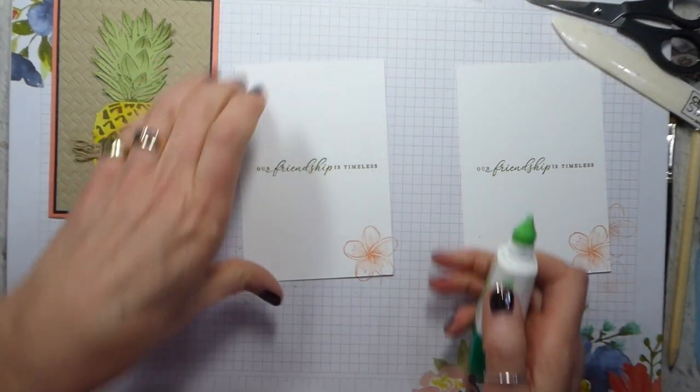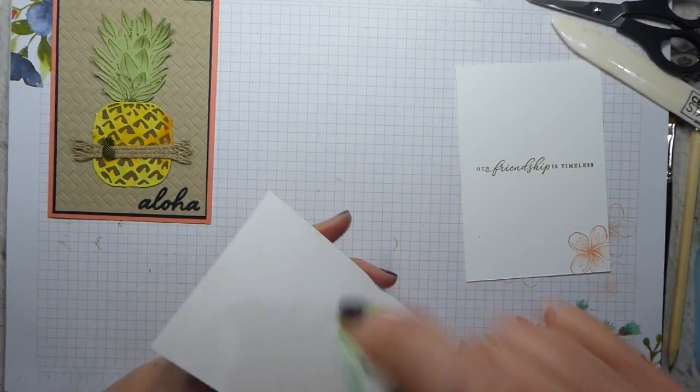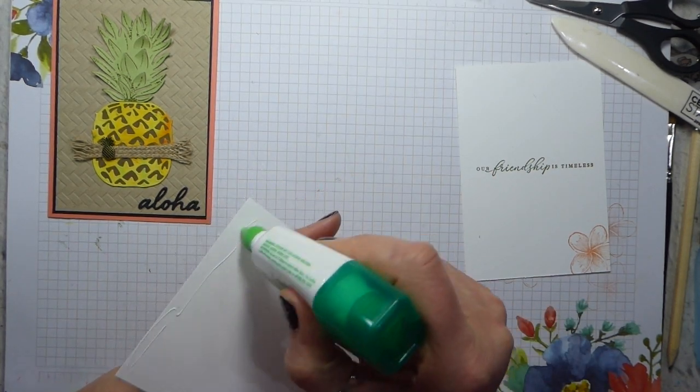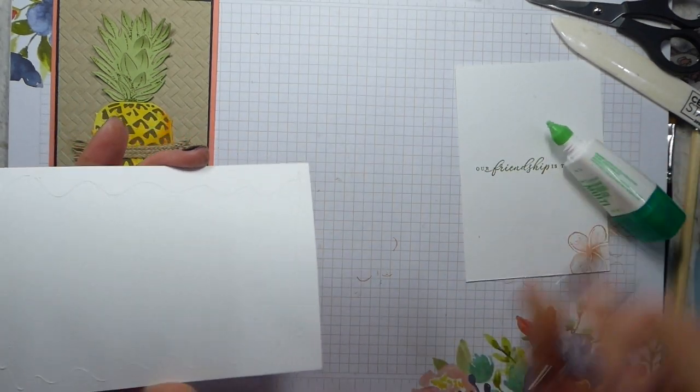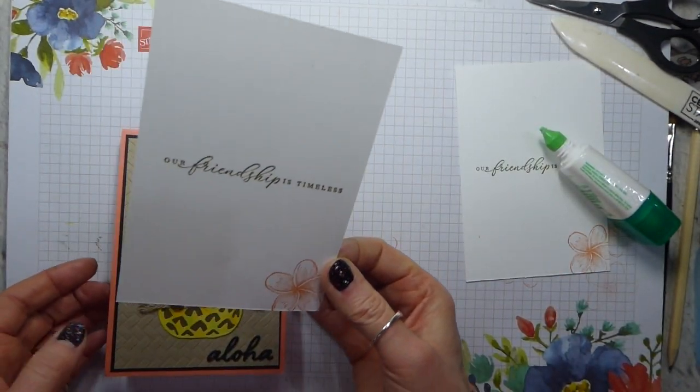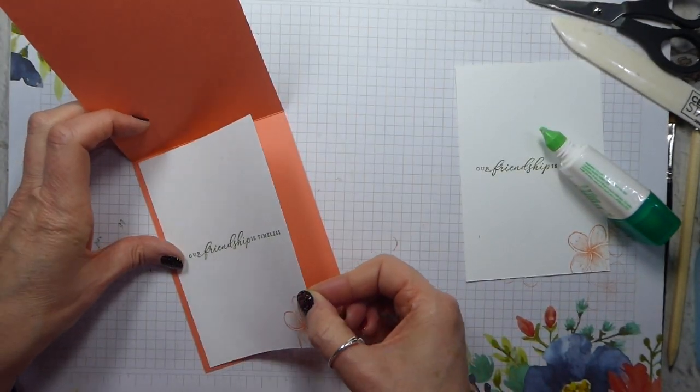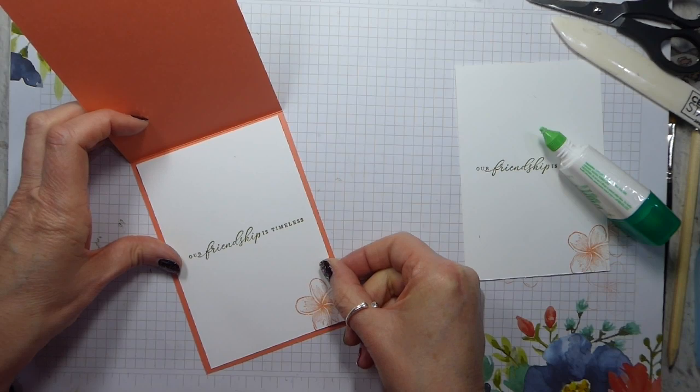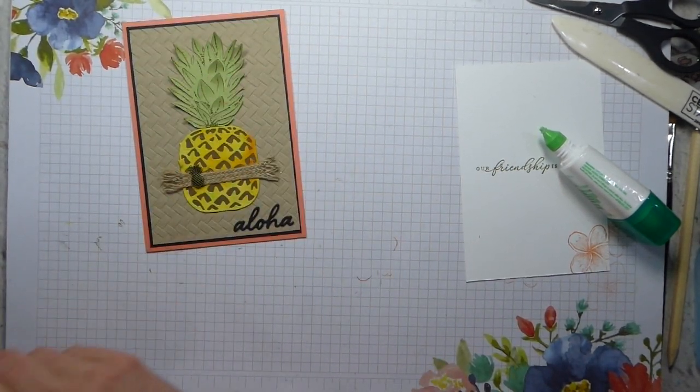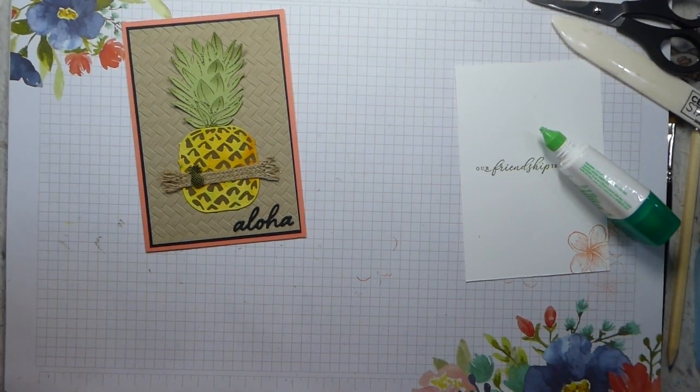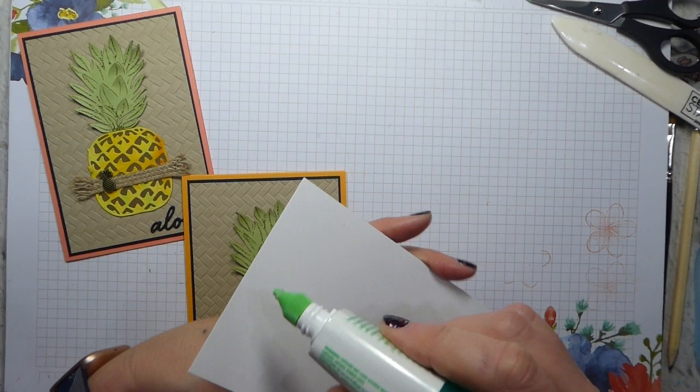And then stick those inside of both of my cards. Cause I forgot. I'm just still not in the habit of doing my inners. And it is what I had said I was going to do. So let's do it. So a little bit of adhesive and pop that into the card and grab the other card and pop that into the card. And then we are done.